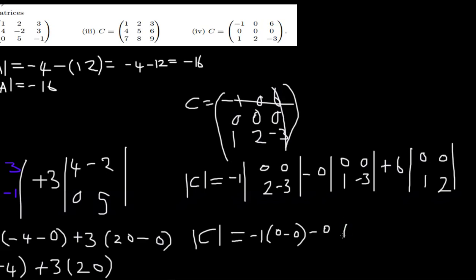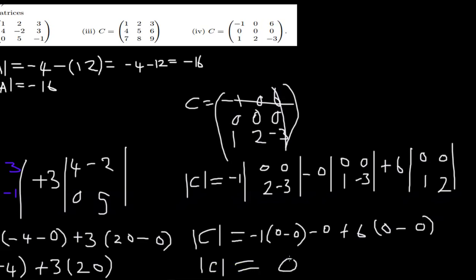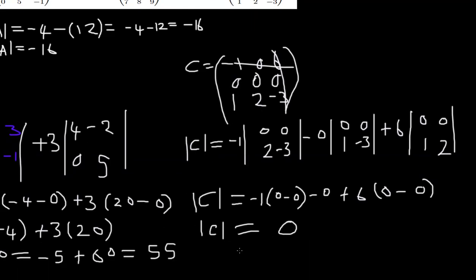So: negative 1 times (0 times negative 3 minus 2 times 0) = negative 1 times 0. Minus 0 times its minor also gives 0. Plus 6 times (0 times 2 minus 1 times 0) = 6 times 0. So the determinant of C is equal to zero.